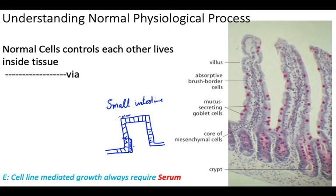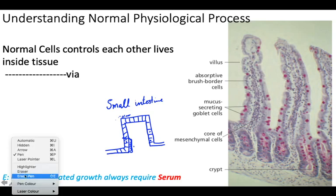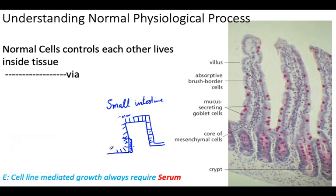There are certain enterocytes being generated here. Once cells slough off from the top of the villi, new cells take the place of those dying neighboring cells. This means the cells will affect each other's life, and this communication is carried through growth factors.